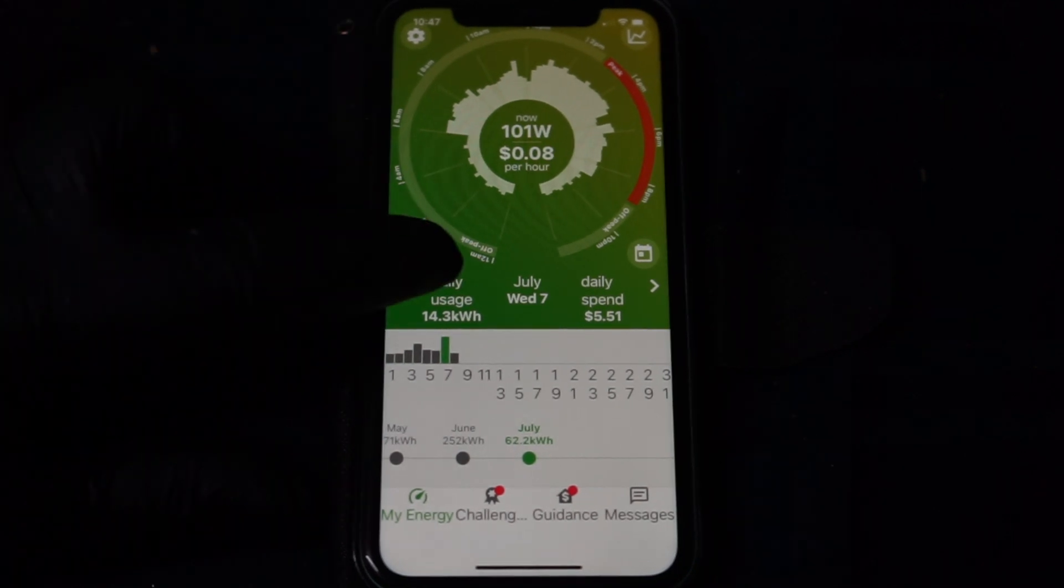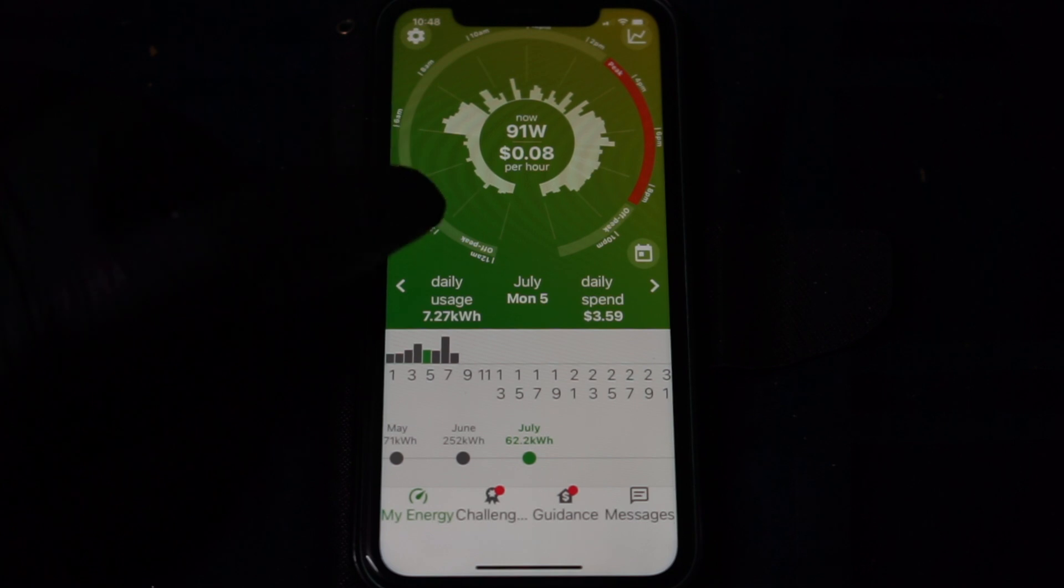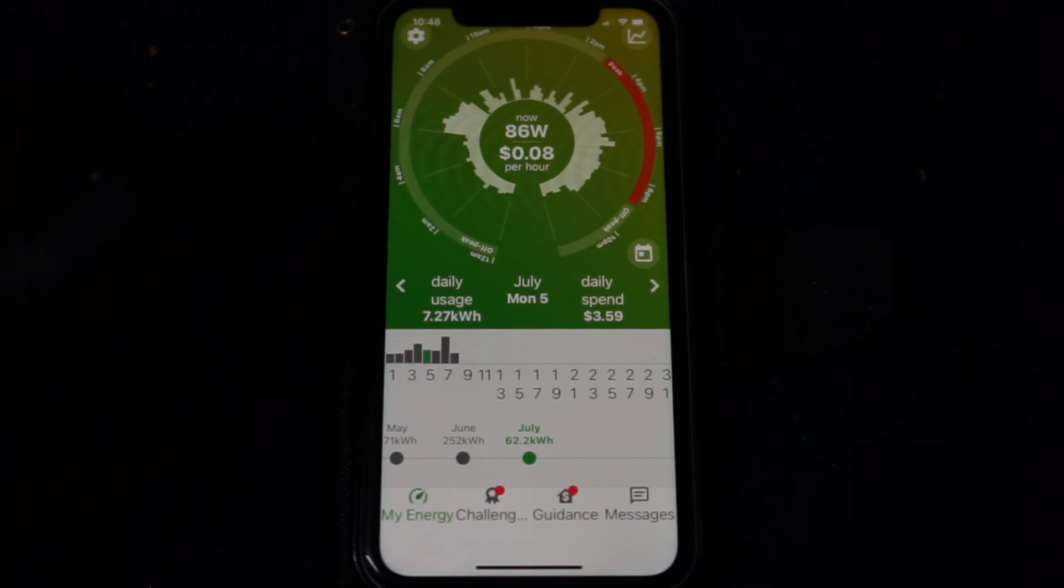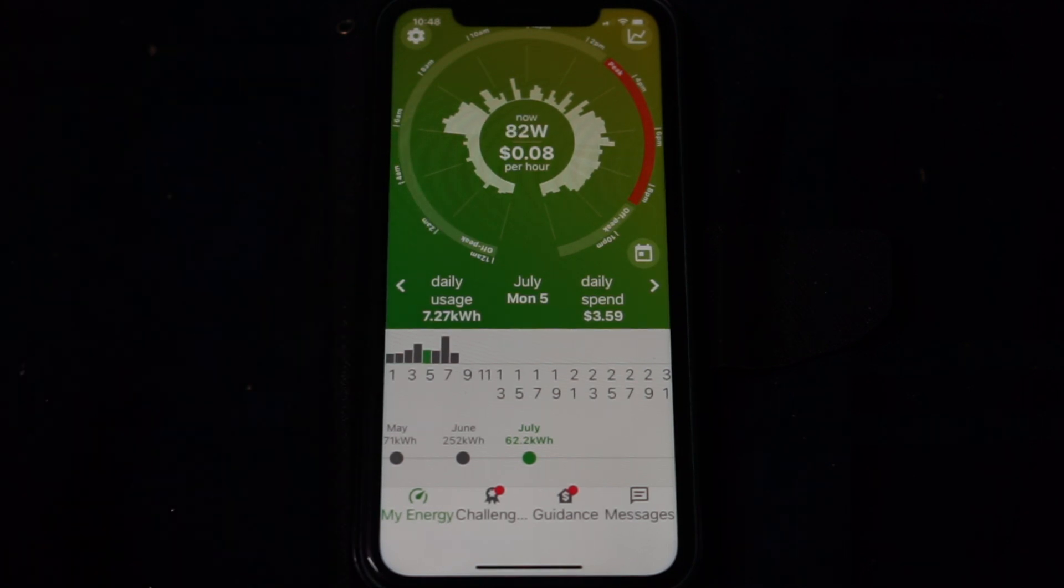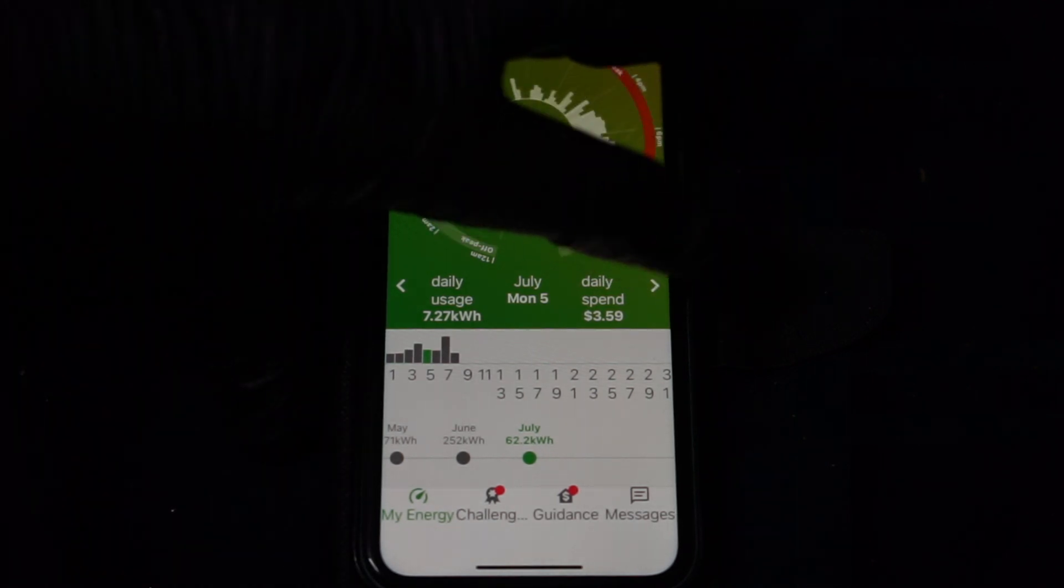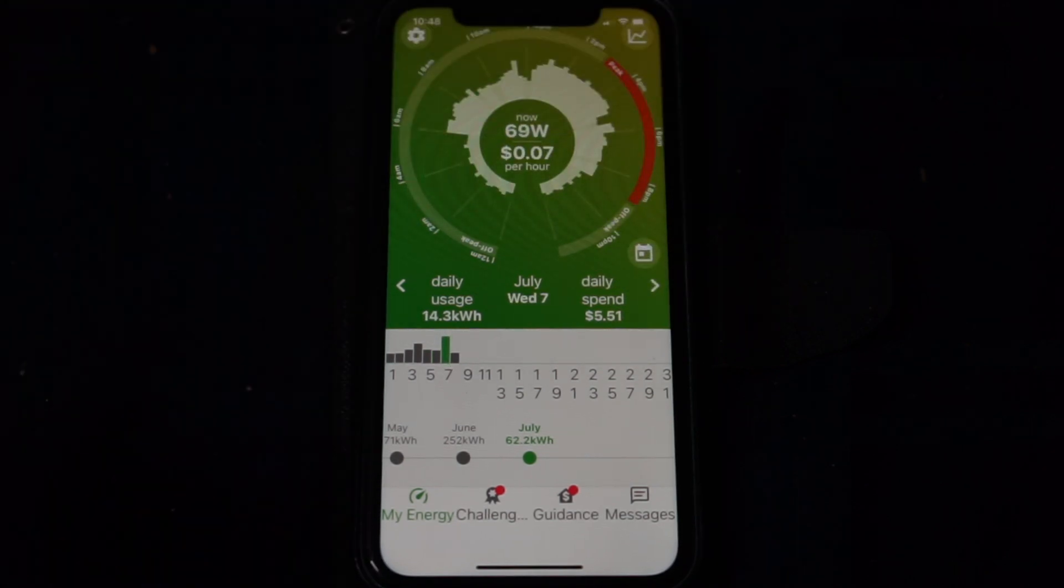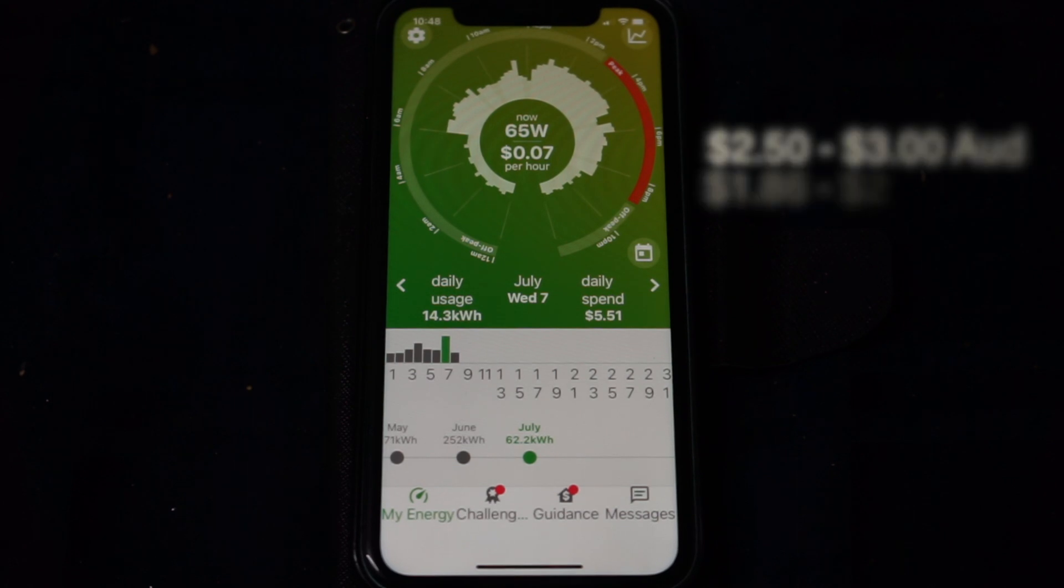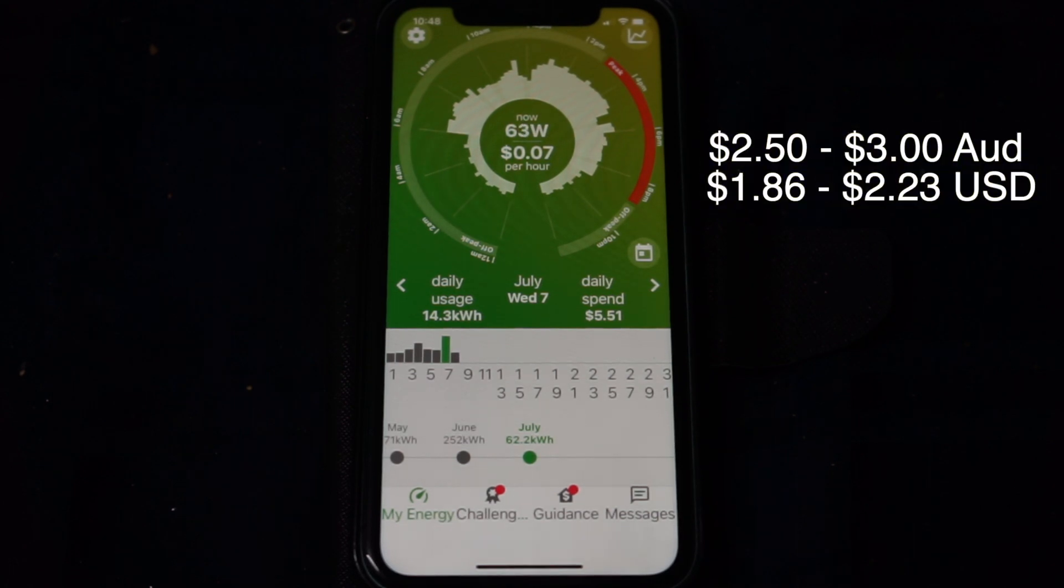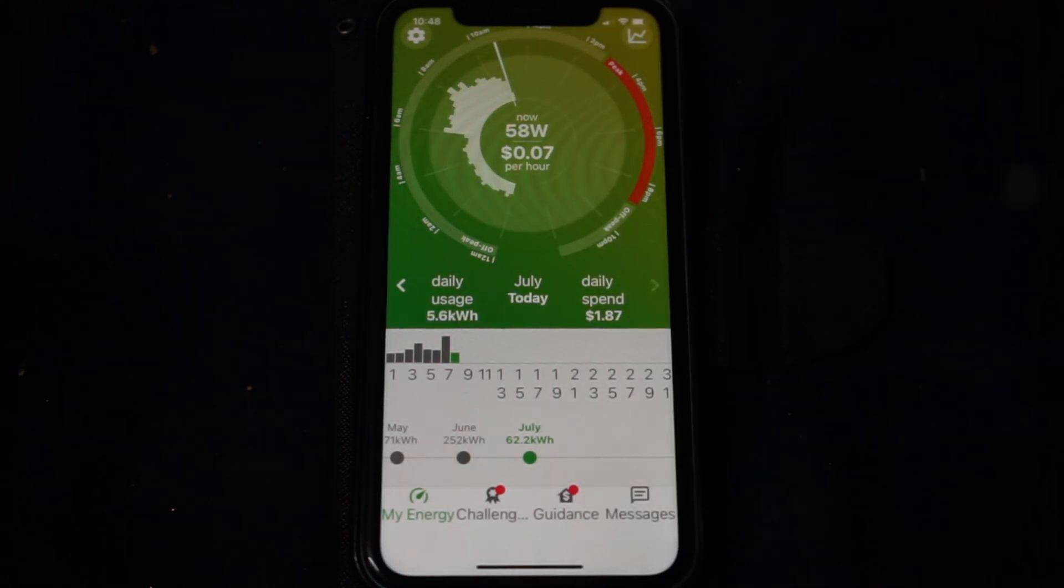So yesterday if I go back one day you can see my daily spend was $5.51. Now on a normal day when I'm not CNC machining if I go back one you can see that my average daily spend is around $3.50 a day and now it is winter here in Melbourne so you've got to account for running the heater at night and that sort of thing.